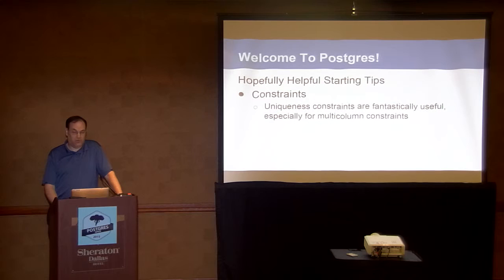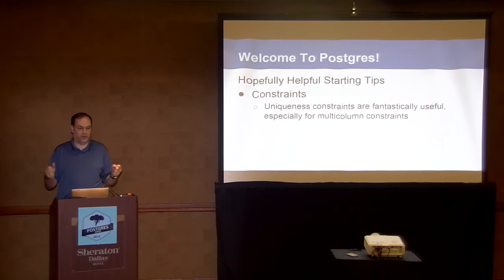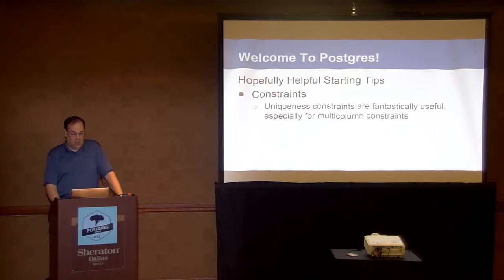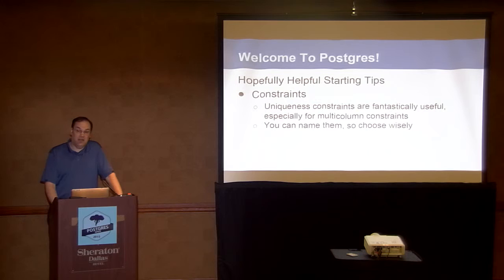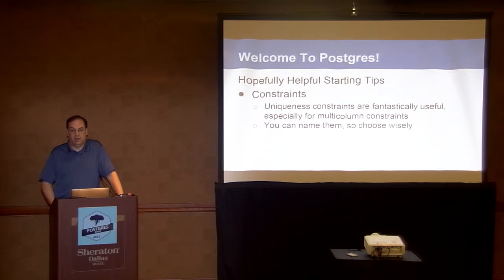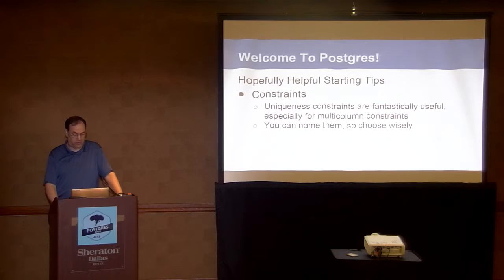Constraints — again, Postgres is about data. We like constraining our data. When you start working with Postgres, you get this kind of 'schema glow' where you really like data modeling and setting up a schema so it only contains the data you want. Uniqueness constraints in Postgres are fantastically useful, especially for multi-column constraints. You can name your constraints too, so that when they fail you can get a more verbose error message and know: the reason this is failing is because I have a uniqueness constraint on this particular column or set of columns.